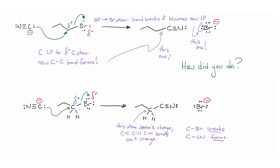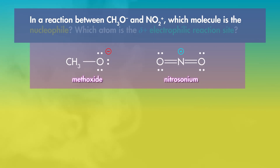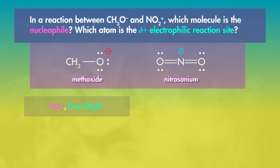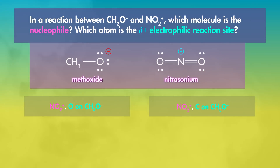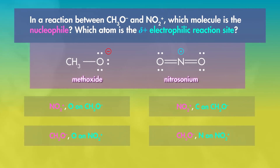Let's try another example. This time, after identifying the nucleophile and the electrophile, we'll try drawing the arrows given the products instead of the other way around. In a reaction between methoxide and nitrosonium, which molecule is the nucleophile and which atom is the δ⁺ center in the electrophile? Options: nitrosonium and the oxygen on methoxide; nitrosonium and the carbon on methoxide; methoxide and the oxygen on nitrosonium; or methoxide and the nitrogen on nitrosonium.